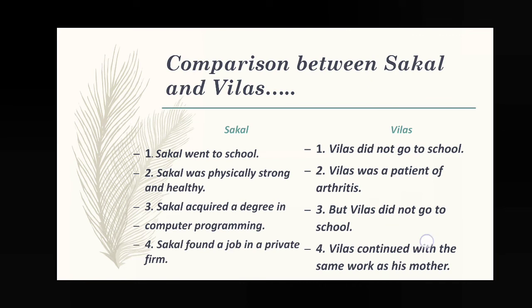Comparing Sakal and Bilas: Sakal went to school; Bilas did not. Sakal was physically strong and healthy; Bilas was a patient of arthritis. Sakal acquired a degree in computer programming; Bilas did not go to school. Sakal found a job in a private firm; Bilas continued the same work as his mother. Sakal got education, healthcare, family support, and training; Bilas did not get any of these facilities.